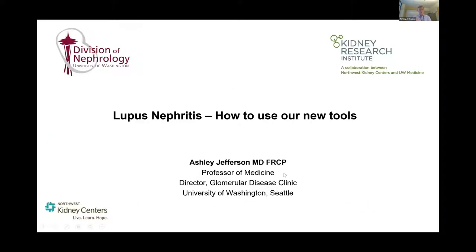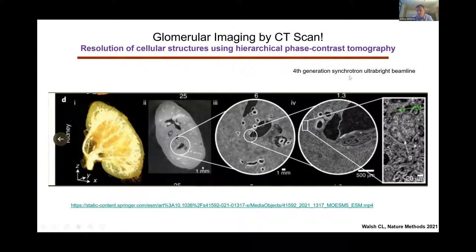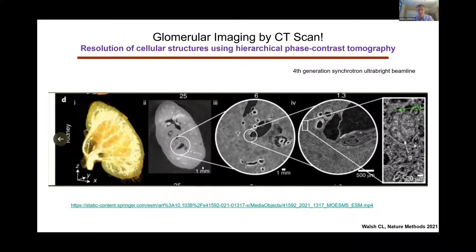I'm going to talk about lupus nephritis this morning, but just before I do, I came across a really cool paper. There have been big advances in molecular biology, single-cell RNA-seq and other things, but this is an example of imaging glomeruli by CT scan using hierarchical phase contrast CT — something called a fourth-generation synchrotron ultra-bright beam light, which sounds like something from Star Trek. What we can see is just higher and higher resolution; in the CT scan they can actually see individual glomeruli, and there might be the efferent arteriole — really incredible advances in imaging.